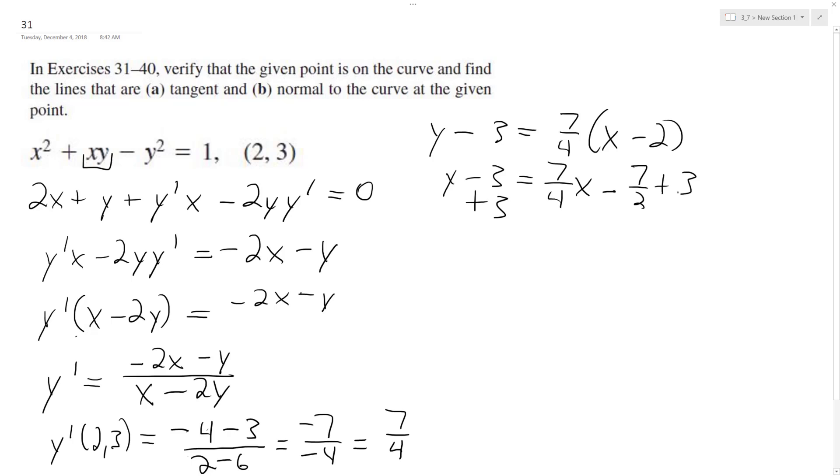So we add 3 to both sides and then what we end up with for our tangent line is going to be equal to 7 fourths x minus 1 half.